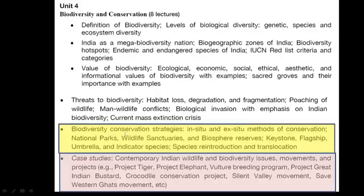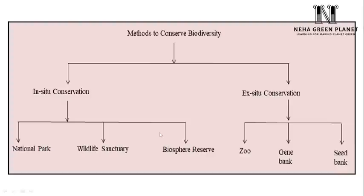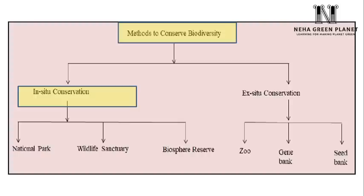Let us start with a discussion on biodiversity conservation strategy. Biodiversity requires protection, especially for those animals and plants for which we know that the number is quite low. The IUCN Red List tells us which species is right now on the verge of becoming extinct and for which we have to prioritize our conservation efforts. Methods to conserve biodiversity include two main approaches: first, we can conserve biodiversity in the natural space — this method is known as in-situ conservation. On the other hand, ex-situ conservation is the method in which we protect plants and animals outside their natural habitat.